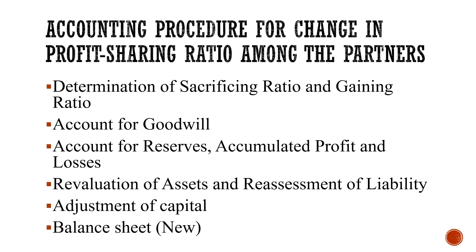Fourth, revaluation of assets and reassessment of liabilities. While admitting or changing the profit sharing ratio, the asset values are revalued. For example, at the time of formation of the partnership firm they bought a building for 5 crores — at present its value may be more or less than 5 crores. We need to revalue assets and reassess liabilities. Fifth, adjustment of capital — prepare separate capital accounts for all the partners. Finally, preparing the balance sheet.